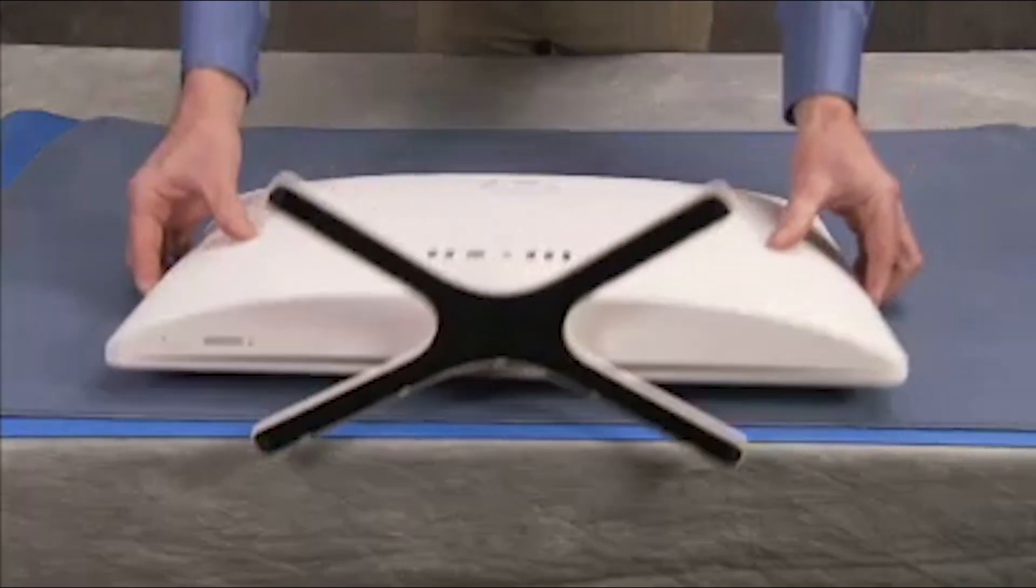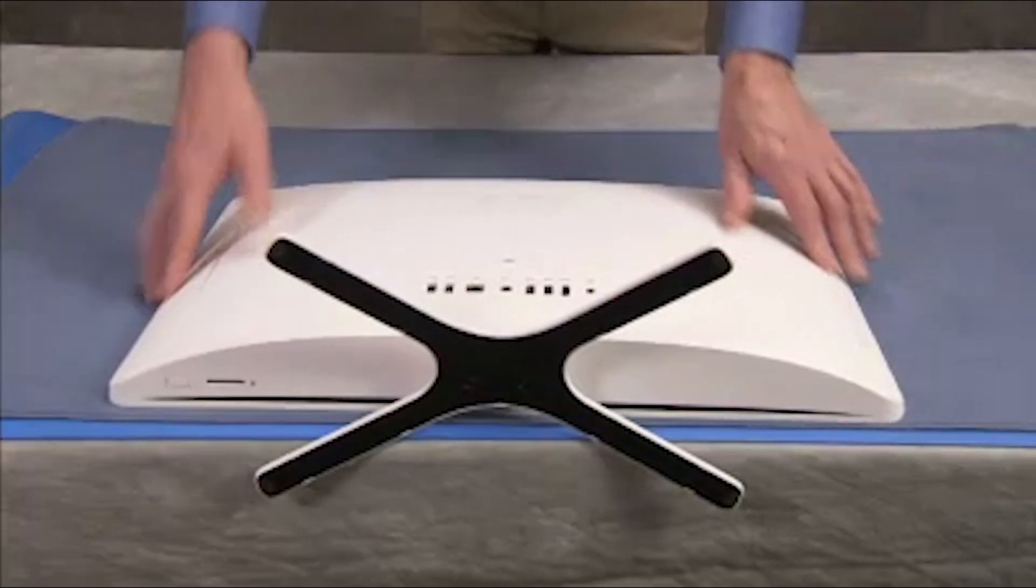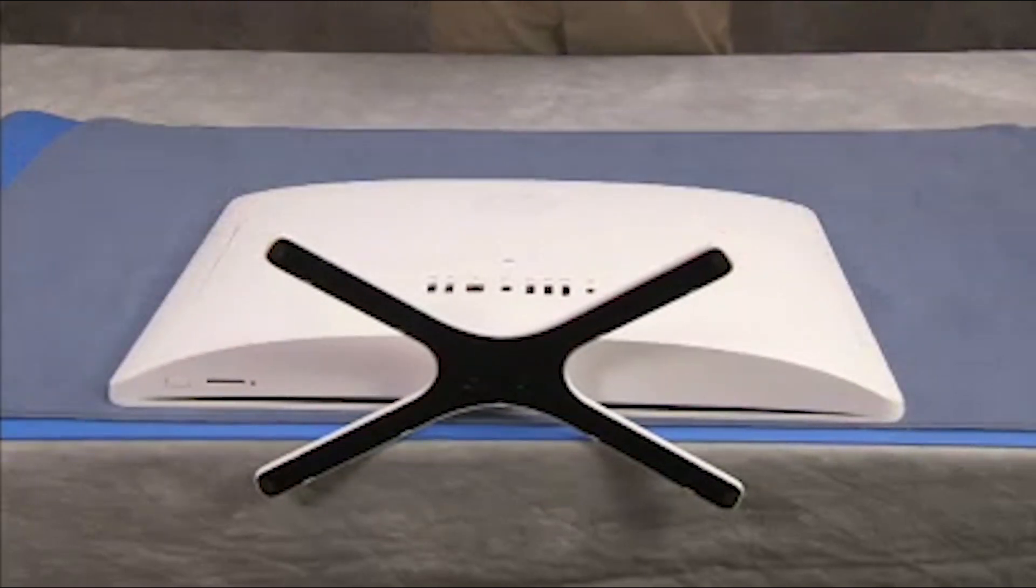To remove the stand, first place the unit face down on a soft flat surface with the edge of the stand overhanging the edge of the table.